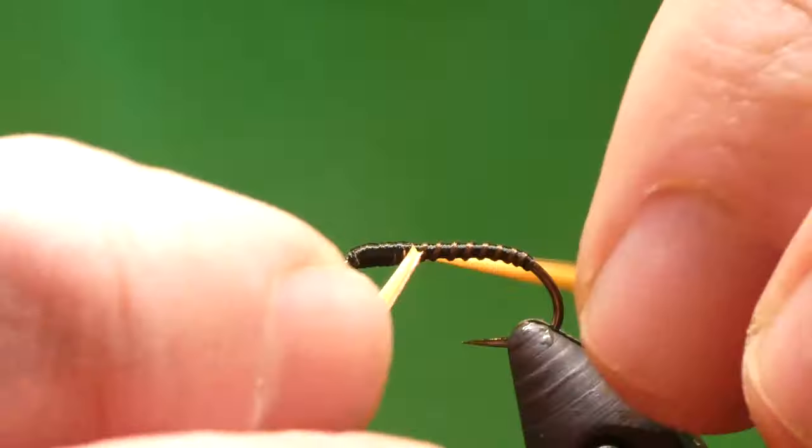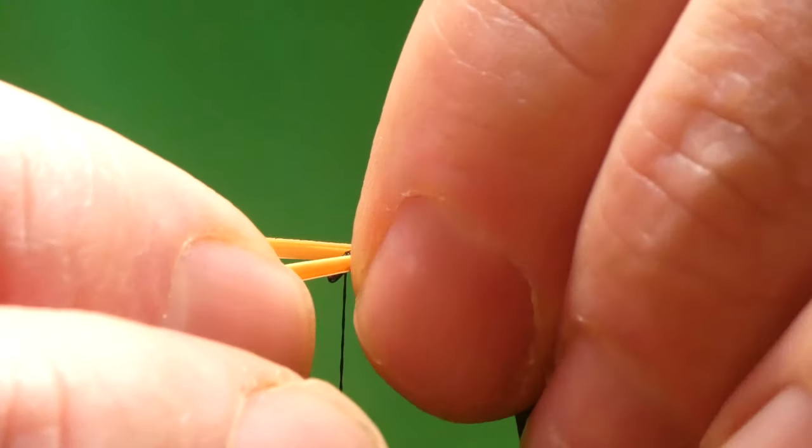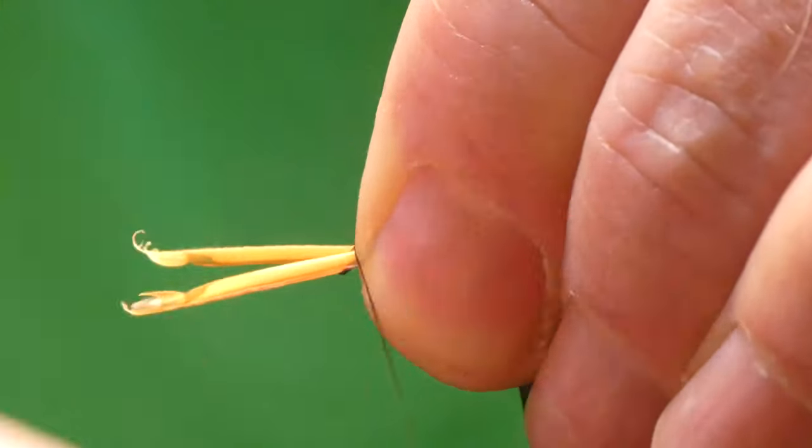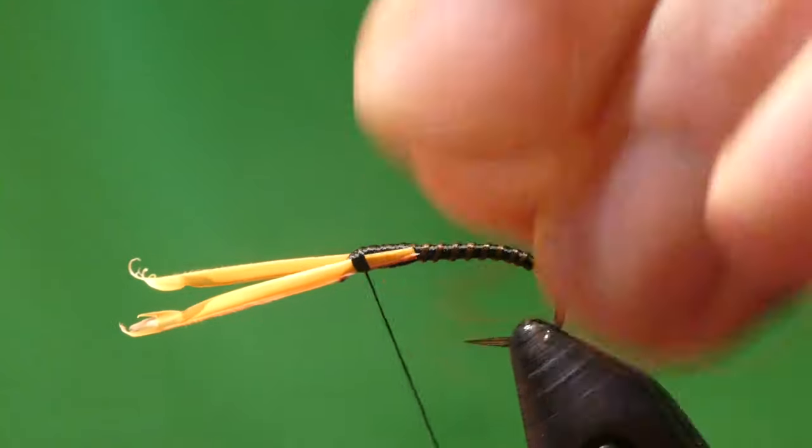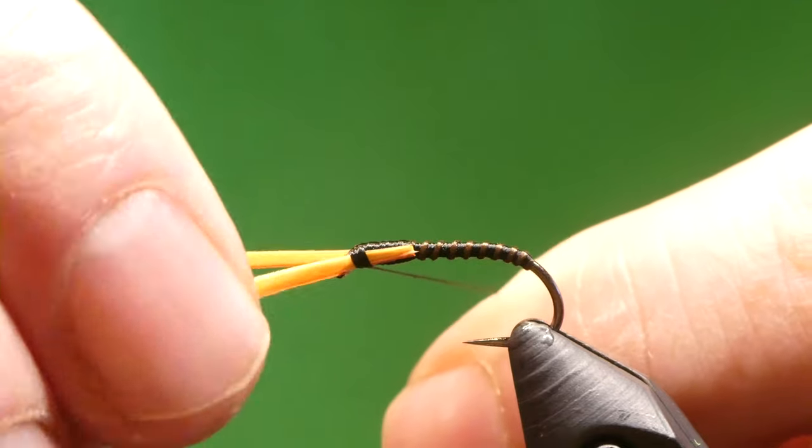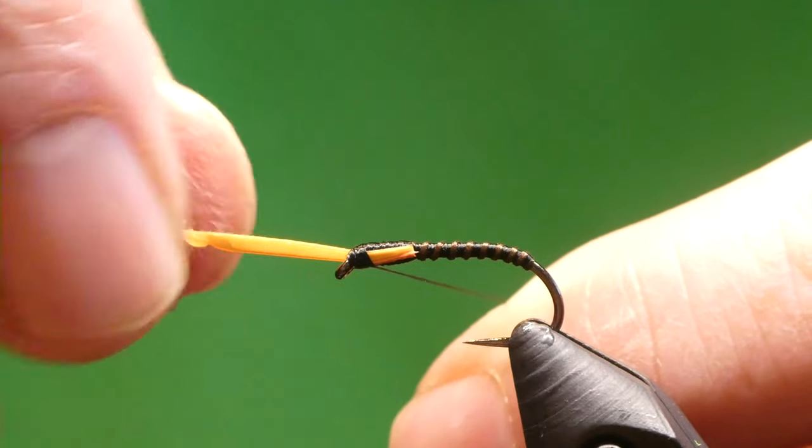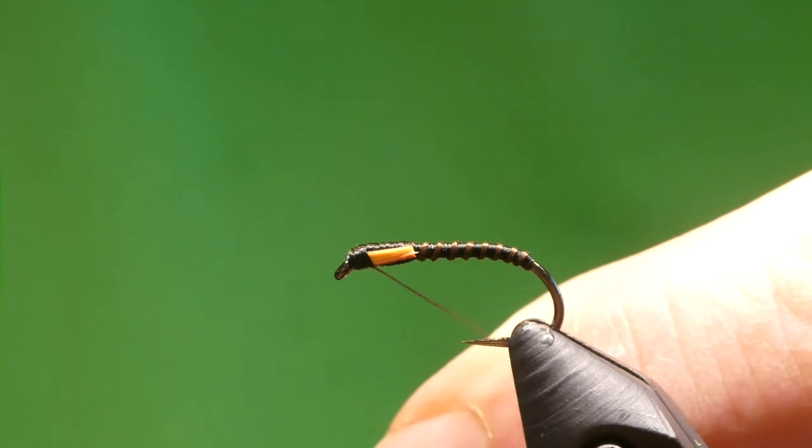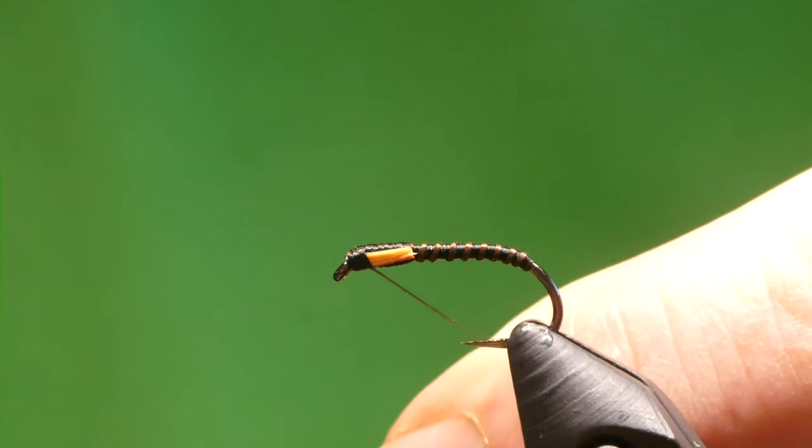And draw the biots forward, hold the thread tight and tear them off, and then whip finish.